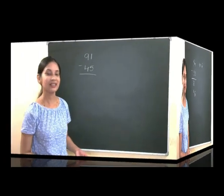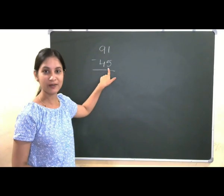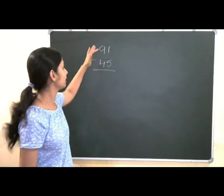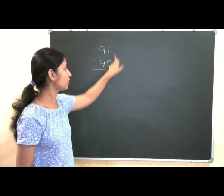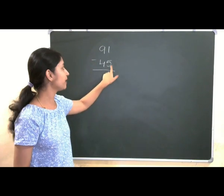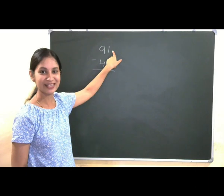Let me take 91 and 45 as our second example. Here I am taking 91 minus 45. You can observe in unit place 5 is more than 1.